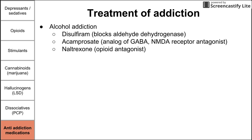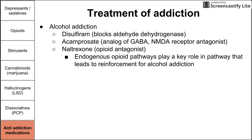Naltrexone is another medication for alcohol addiction — it's an opioid antagonist. Endogenous opioid pathways play a role in the pathway leading to alcohol addiction, so antagonizing the opioid receptor can help reduce addiction and dependence on alcohol.